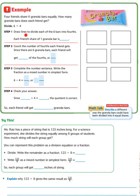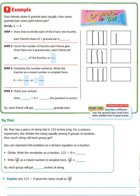Step 1 says to draw lines to divide each of the 6 bars into fourths. When cutting into fourths, we make 3 cuts in each bar: 1, 2, 3 — doing this for all 6 bars.